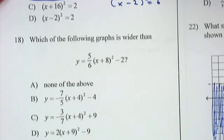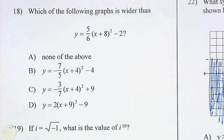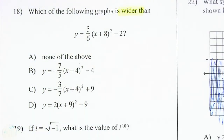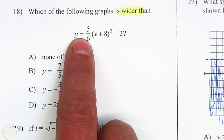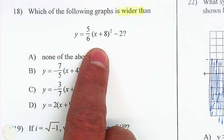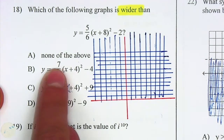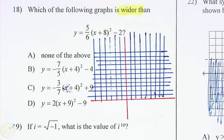Let's continue on problem number 18. Which of the following graphs is wider than 5 over 6? Now I'm going to make a quick graph, just like we've done in class. We have 5 over 6.